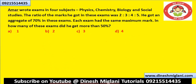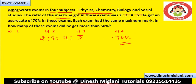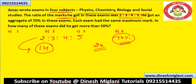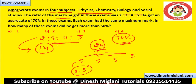Amar wrote 4 subjects: Physics, Chemistry, Biology, and Social Studies. The ratio of marks he got was 2:3:4:5 and he got an aggregate of 70%. Taking maximum marks as equal, the sum of ratios is 14 and 70% of total equals 14, so total maximum per subject is 5. 50% of 5 is 2.5. The subjects where he scores more than 2.5 are those with ratio values 3, 4, and 5 — so the answer is 3 subjects.